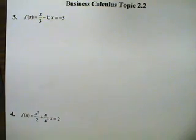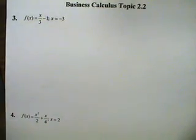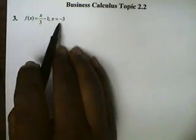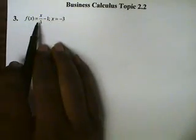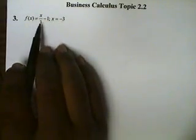Business calculus, topic 2.2. We want to find the instantaneous rate of change at x equals negative 3 for the function f. We'll be using the difference quotient.